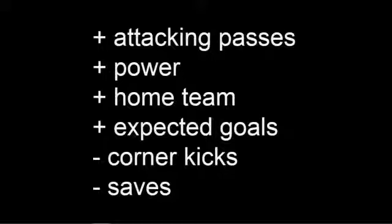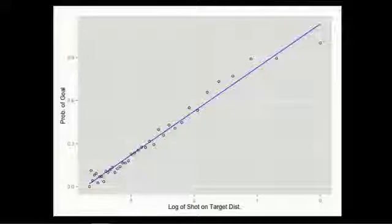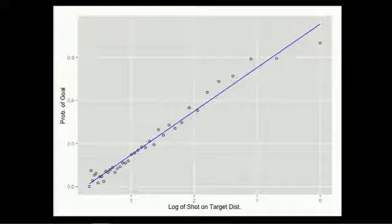The features that proved to be important were attacking passes — the number of passes in the attacking third of the field — a power statistic I'll talk about in a minute, home team advantage (which is huge in soccer), and an expected goal statistic that combines where shots were taken from and the number of shots to estimate how many goals you'd expect to score, which is less susceptible to randomness than just using goals. Corner kicks and saves turned out to have very little predictive power. Here's the log-linear relationship between the distance a shot was taken from and the probability of a goal — this is what we use for our expected goal statistic.